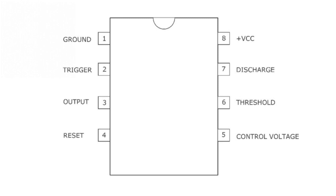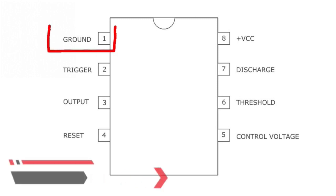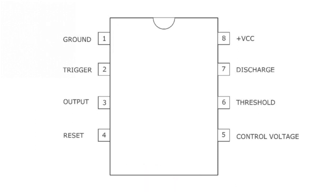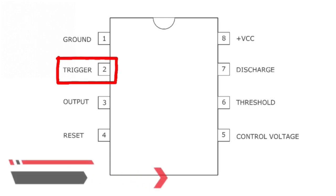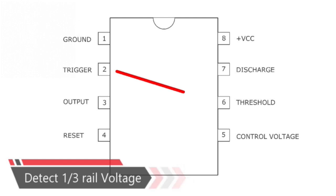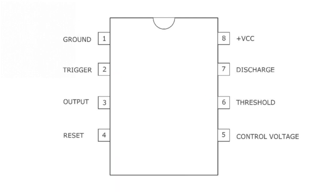Pin 1 — ground — connects to the zero volt power supply. Pin 2 — trigger — detects one-third of rail voltage to make the output high. Pin 2 has control over pin 6: if pin 2 is low and pin 6 is low, the output stays high.